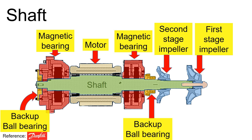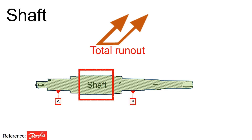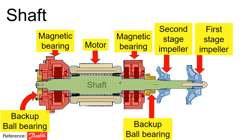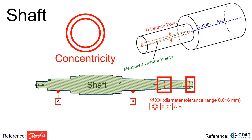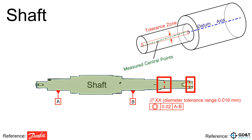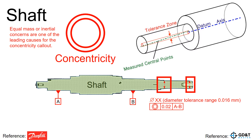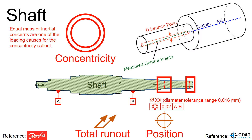Returning to the overall layout around the shaft — at the motor location, the total runout can also be defined. Now, let's consider the impeller location. Concentricity can be used here to ensure a good fit with the impeller, as unequal mass or inertia concerns are one of the leading causes for a concentricity callout. However, runout or position tolerances are often more practical, and in many occasions they replace the need for concentricity because they are easier to measure.